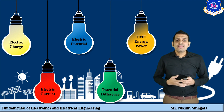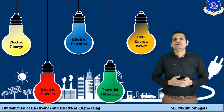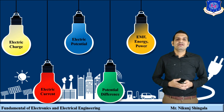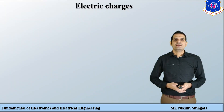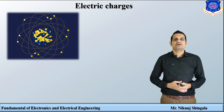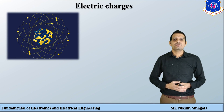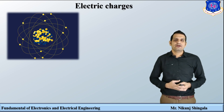Several theories about electricity were developed through experiments and by observation of its behavior. The only theory that has survived over the years to explain the nature of electricity is modern electron theory. So let us understand the modern electron theory of matter and electric charge. Basically, every matter is electric in nature — every substance consists of particles like protons, neutrons, and electrons.